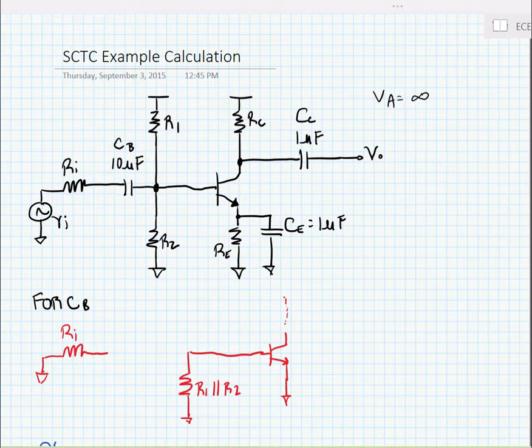So let's do the analysis for CB, the base capacitor. Here I've redrawn the base capacitor circuit for analysis. We're going to replace the capacitor under analysis with the test voltage source V sub X.